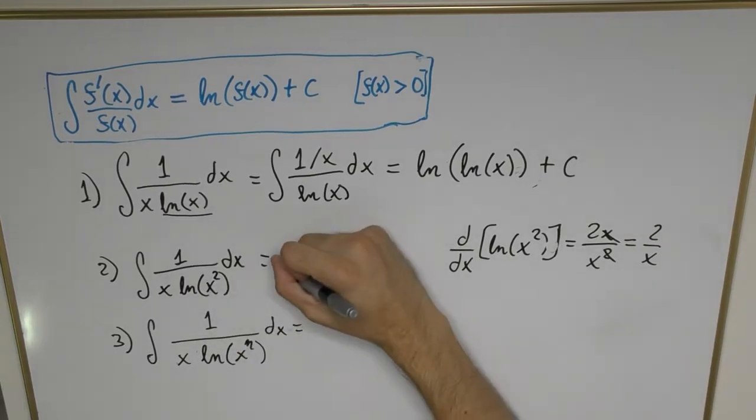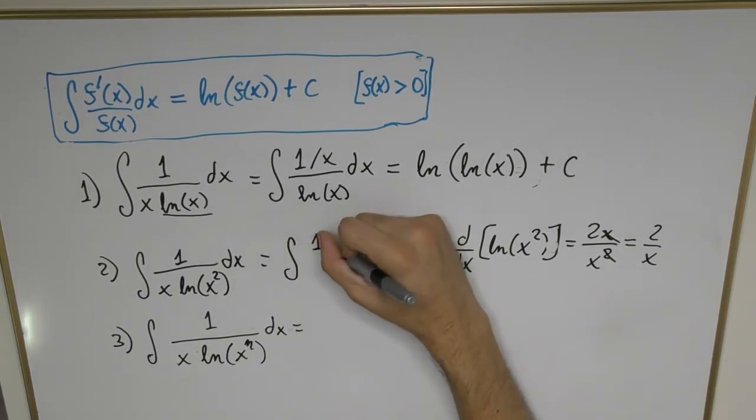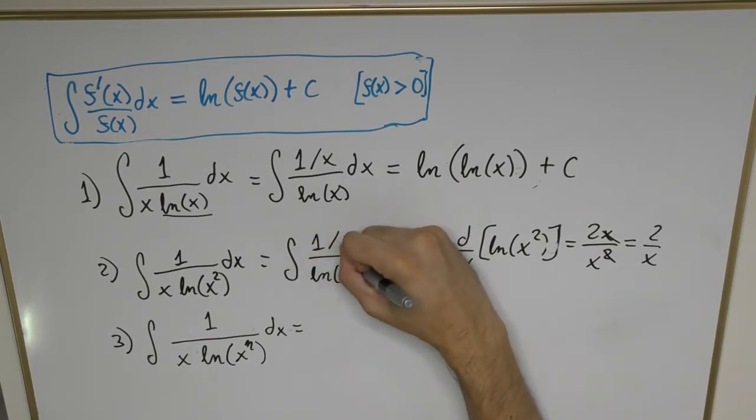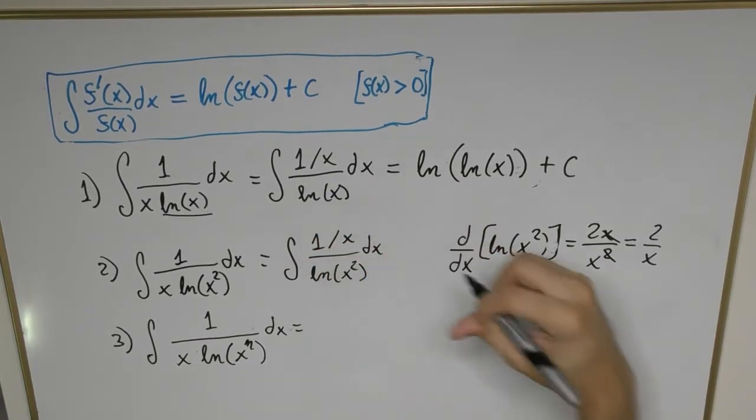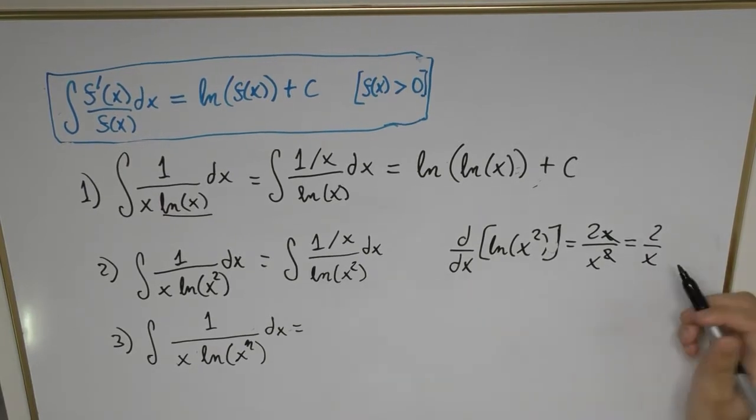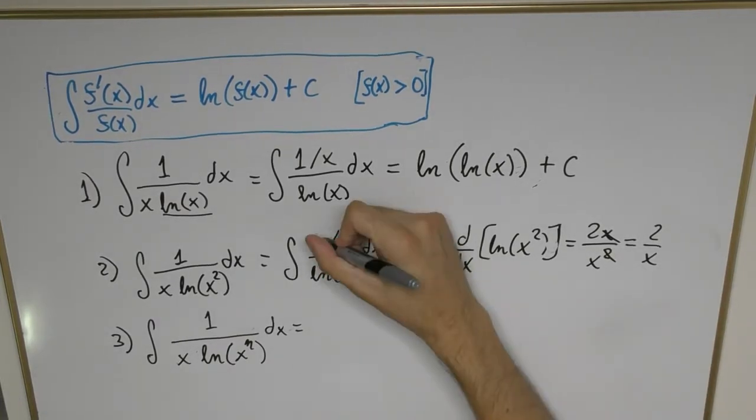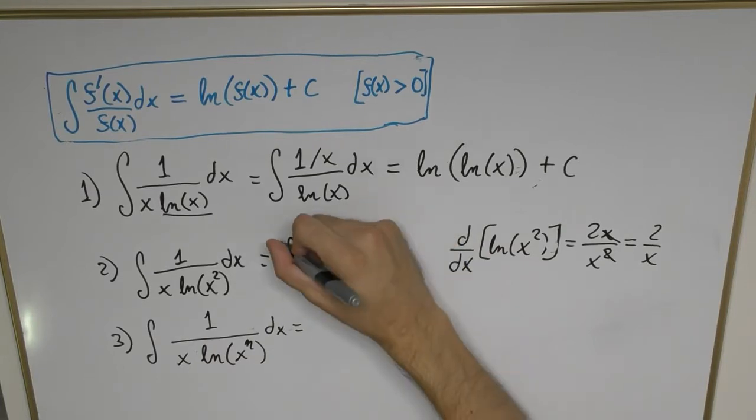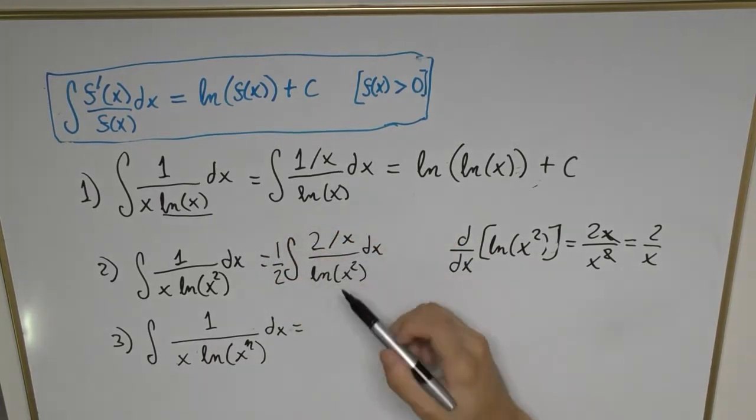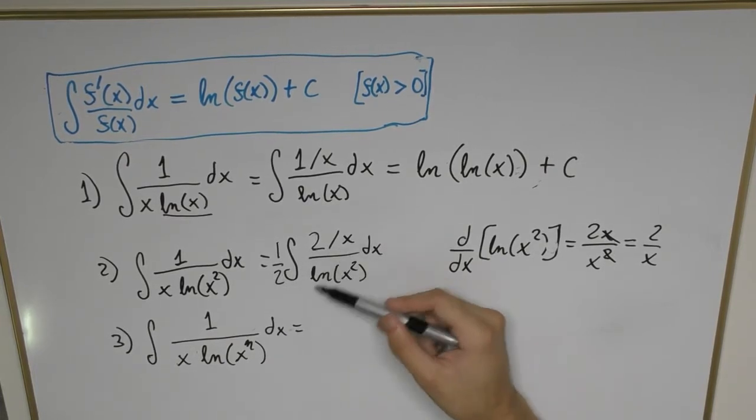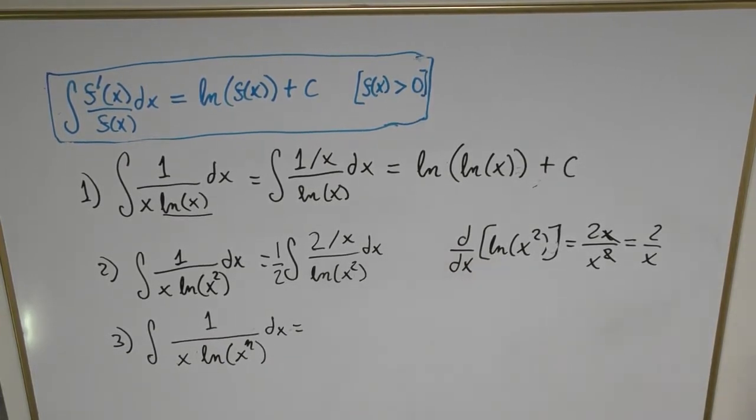Now if we look closely, the integral we have here is expressed in the form (1/x) / ln(x²) dx, so the only thing we're missing is that factor of 2. So we can place a 2 here and to make sure everything is consistent, we're going to place a factor of 1/2 at the front of the integral so that these cancel out.